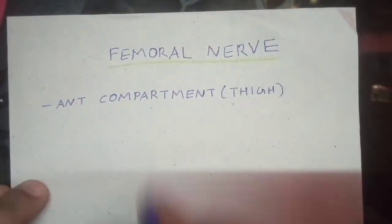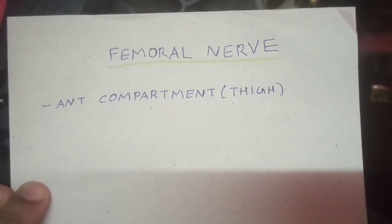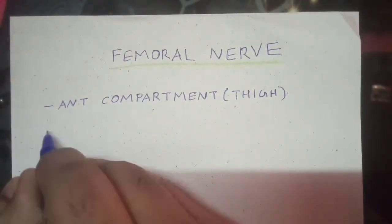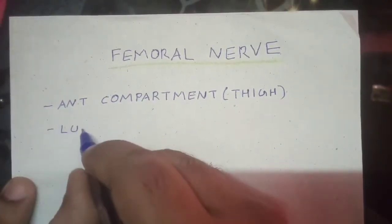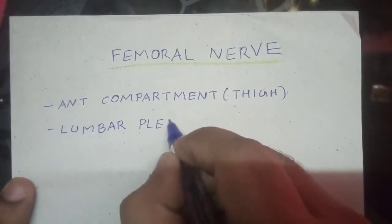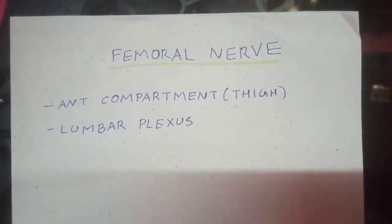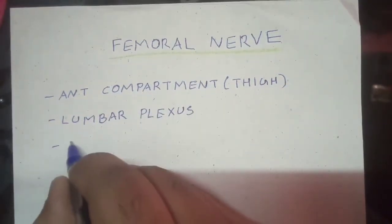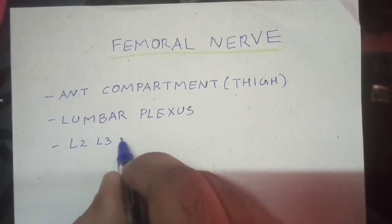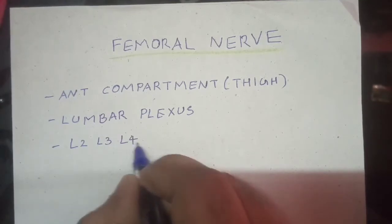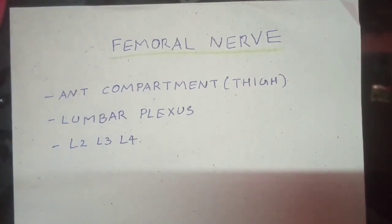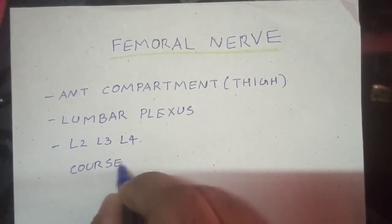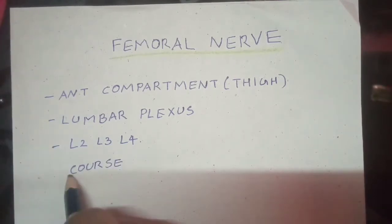anterior compartment of the thigh. For the origin and root value of this nerve, it is the largest branch of the lumbar plexus, and it is formed by the dorsal division of the anterior primary rami of the spinal nerves L2, L3, and L4. The root value is L2, L3, L4.